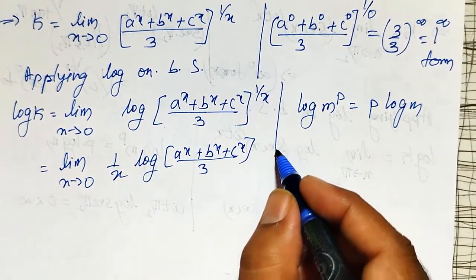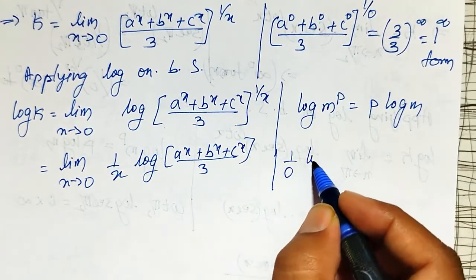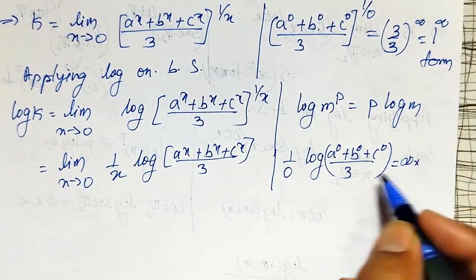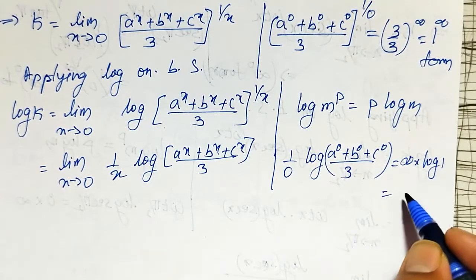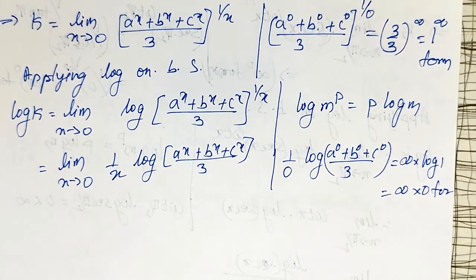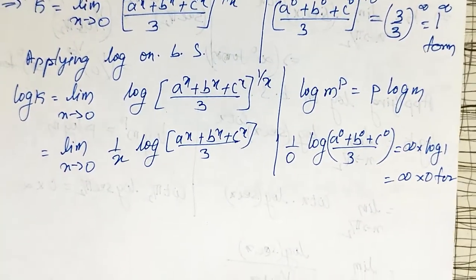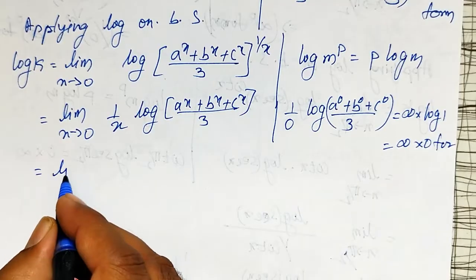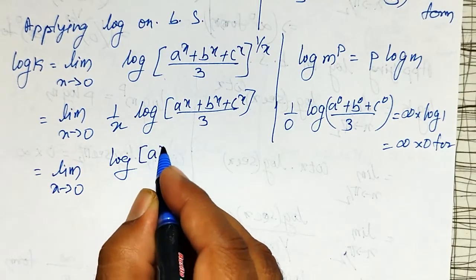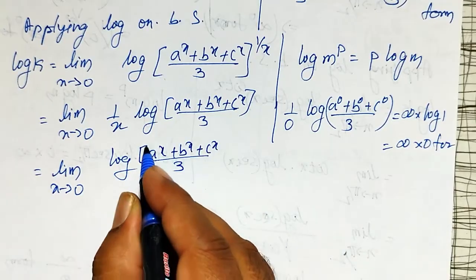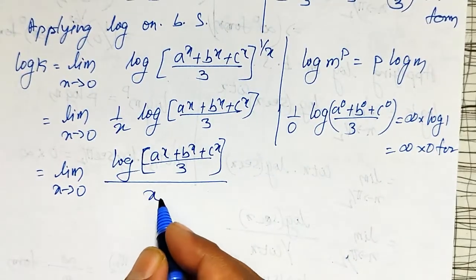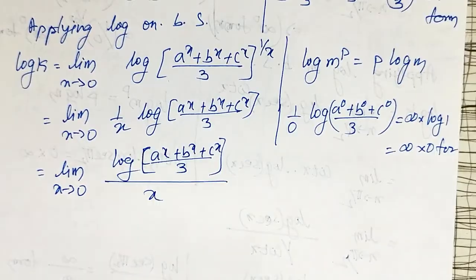If we substitute x = 0 here, we get (1/0)·log[(a^0 + b^0 + c^0) / 3], which is ∞ · log(1). Since log(1) = 0, this is the ∞ · 0 form. To convert it into 0/0 or ∞/∞ form, I will rearrange by writing log[(a^x + b^x + c^x) / 3] divided by x, instead of multiplying by 1/x. The value remains the same, but now it becomes the 0/0 form.